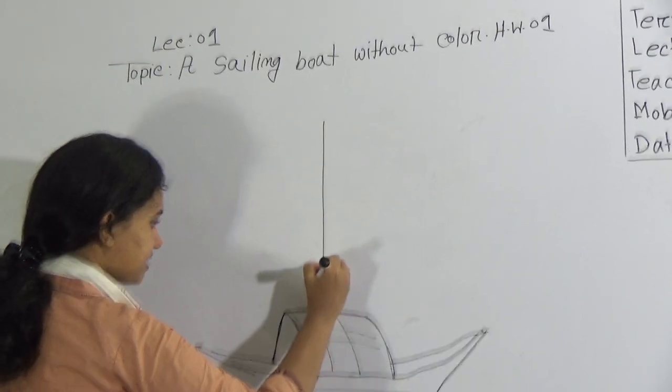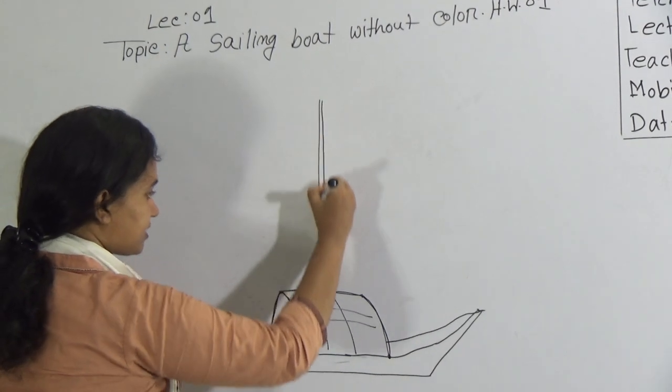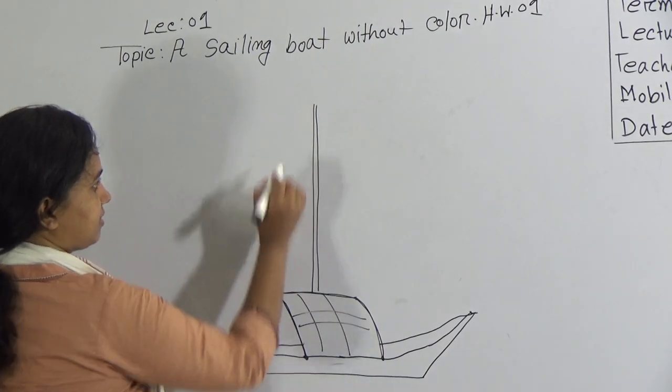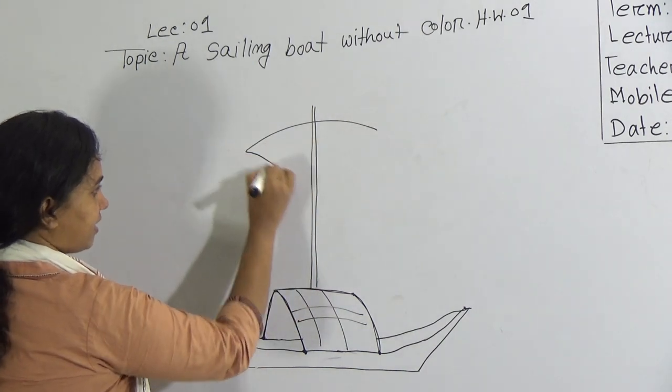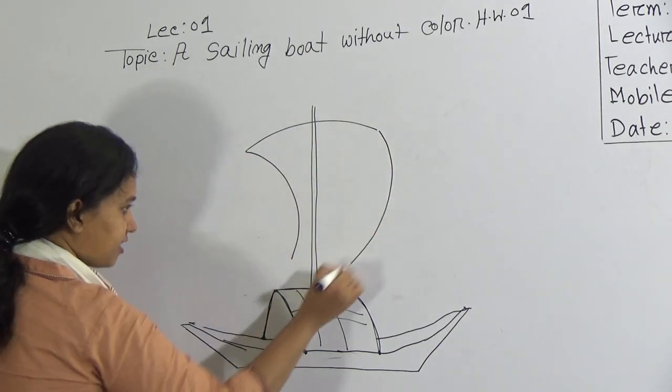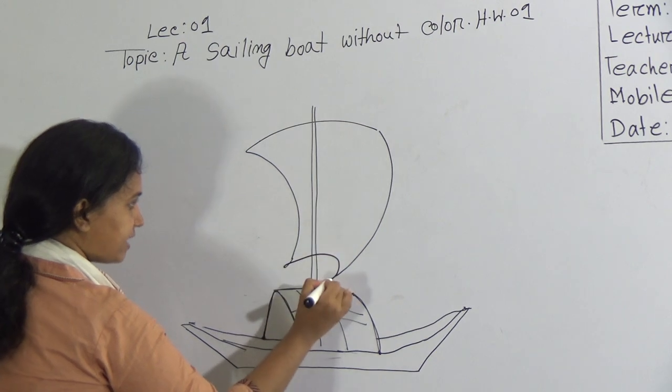First, give a straight line. Just a straight line. Okay, then give a curved line. Again a curved line. A curved line. And join like this line.